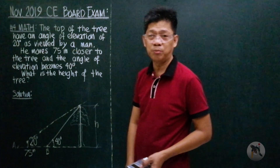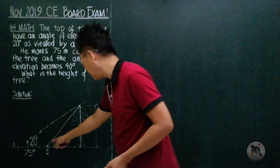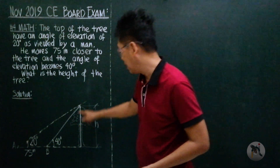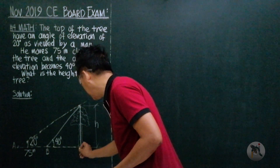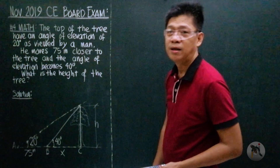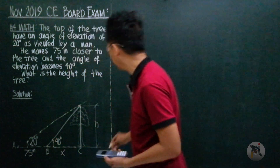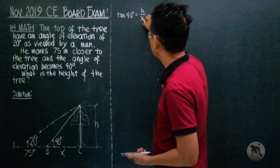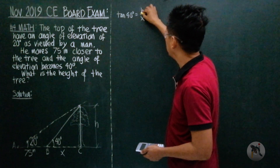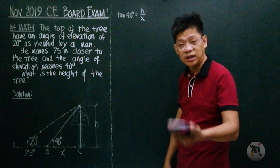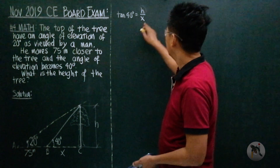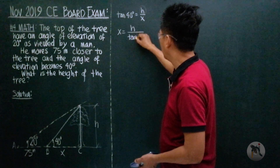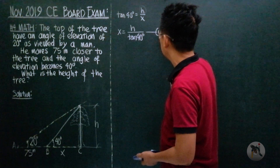We're asked to find the height of the tree. Take note: this right triangle and this right triangle have a common element — the height. Let me call BC as x. From this right triangle, the tangent of 40 degrees is h over x. Since we're looking for h, we need an equation containing h only, so x equals h over tangent of 40 degrees. Call this equation one.